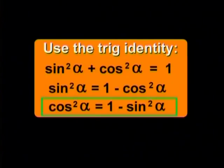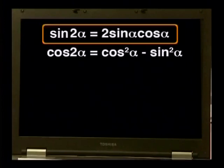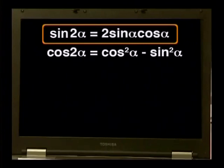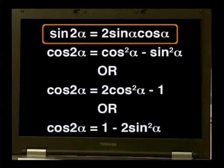If we use the third version of the identity we'll end up with something with sine squared in it. We will end up with cosine two alpha equals one minus two sine squared alpha. So sine two alpha can only be replaced by two sine alpha cosine alpha, but when we come across cosine two alpha we have a choice of three options: cosine squared alpha minus sine squared alpha, or two cosine squared alpha minus one, or one minus two sine squared alpha.